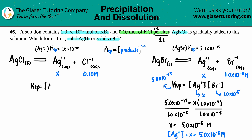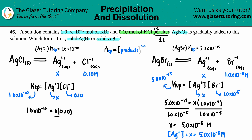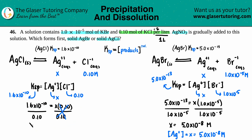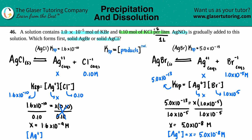Ksp = [Ag⁺][Cl⁻]. Cl⁻ is 0.10 M, Ag⁺ is x, and Ksp for AgCl is 1.6×10⁻¹⁰. So: 1.6×10⁻¹⁰ = x × 0.10. Dividing by 0.10 gives x = 1.6×10⁻¹⁰ ÷ 0.1 = 1.6×10⁻⁹ M. So the Ag⁺ concentration needed to begin precipitating AgCl is 1.6×10⁻⁹ M.